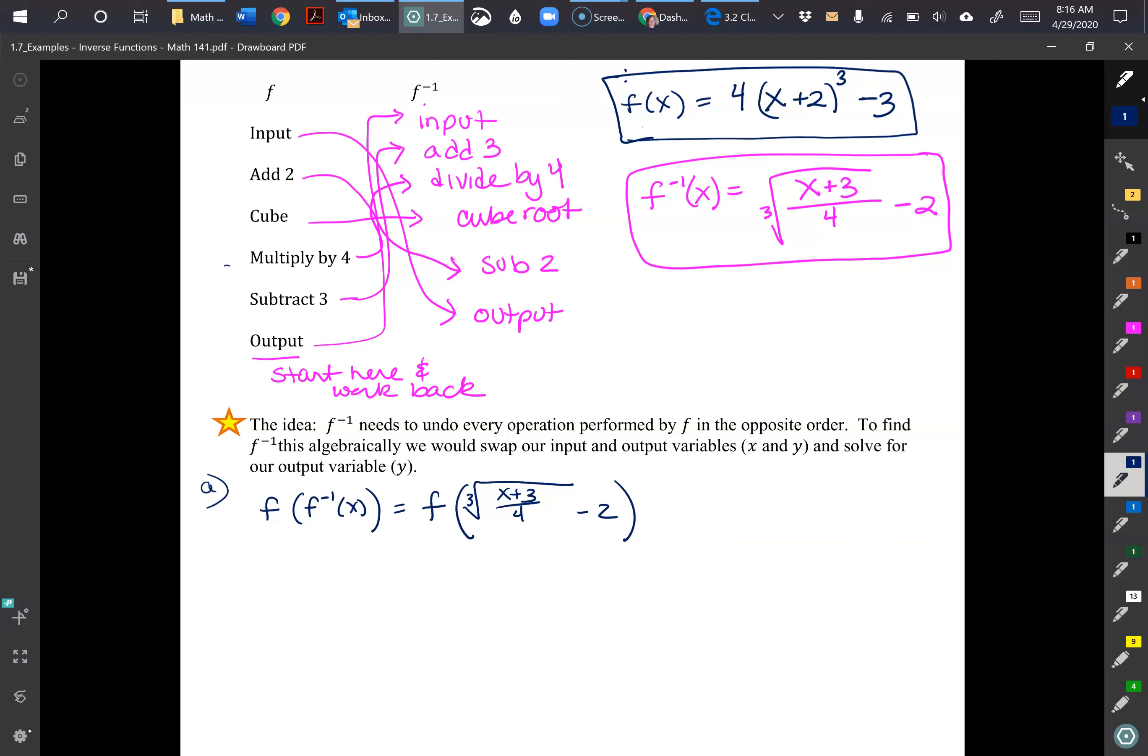So we have 4 times cube root of X plus 3 over 4 minus 2, that's all just for our X, right? And then we have plus 2 up here from our function. This is our inverse, we will put that in red here. And then we're going to add 2 because that's part of our F function up above there.